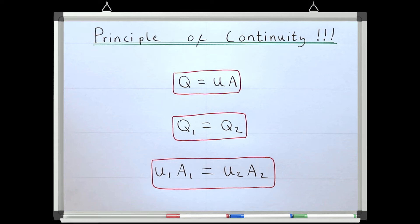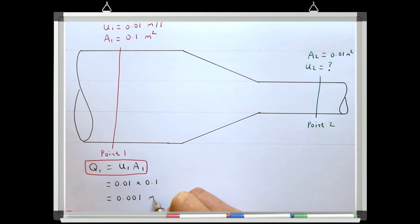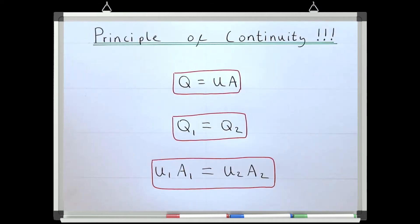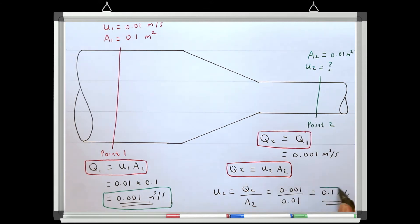We know that Q equals UA, and that Q1 equals Q2, which equals U1A1, which equals U2A2. The discharge at point one will be the velocity at point one times the area at point one, which gives us a discharge at point one of 0.001 metres cubed per second. We know that the discharge at point two has to be the same as the discharge at point one. Finally, we can use the continuity equation to get our velocity at point two by rearranging for U2. We know that Q2 equals U2A2, and we now have the values for Q2 and A2, so we can rearrange to get a velocity of 0.1 metres per second at point two.